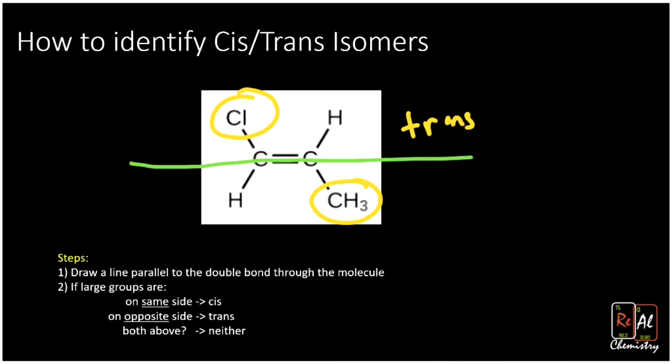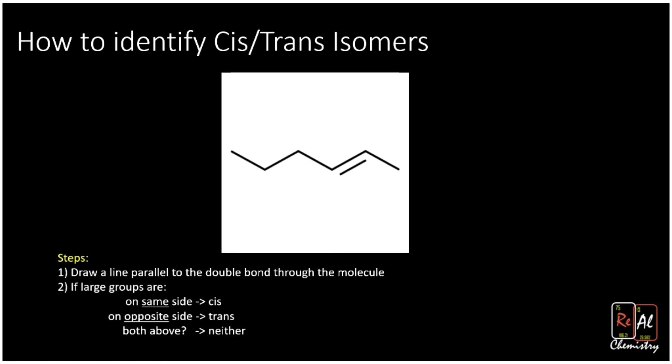Let's look at another one. Here we now have a line angle structure, which can start to be a little more confusing. But if we follow the same steps, we'll be good. Draw a line parallel to the double bond. Cool. Now circle the groups. One group here. One group here. So one is on the left-hand side and one is on the right-hand side. That means, again, we have a trans molecule.